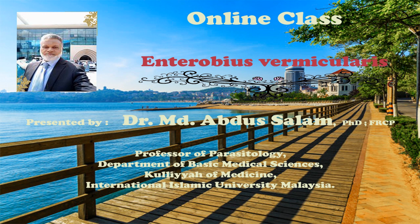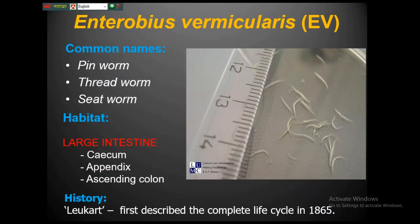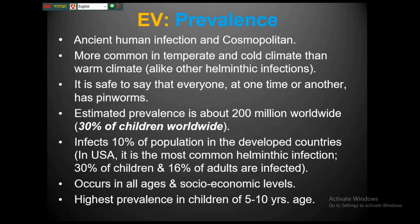This morning I'm going to discuss Enterobius vermicularis, one of the intestinal nematodes. It has many common names such as pinworm and threadworm. Along with Trichuris trichiura, this is one of the large intestinal nematodes and can live in the cecum, appendix, or ascending colon. In 1865, the scientist Leucart first described the complete life cycle of Enterobius vermicularis.